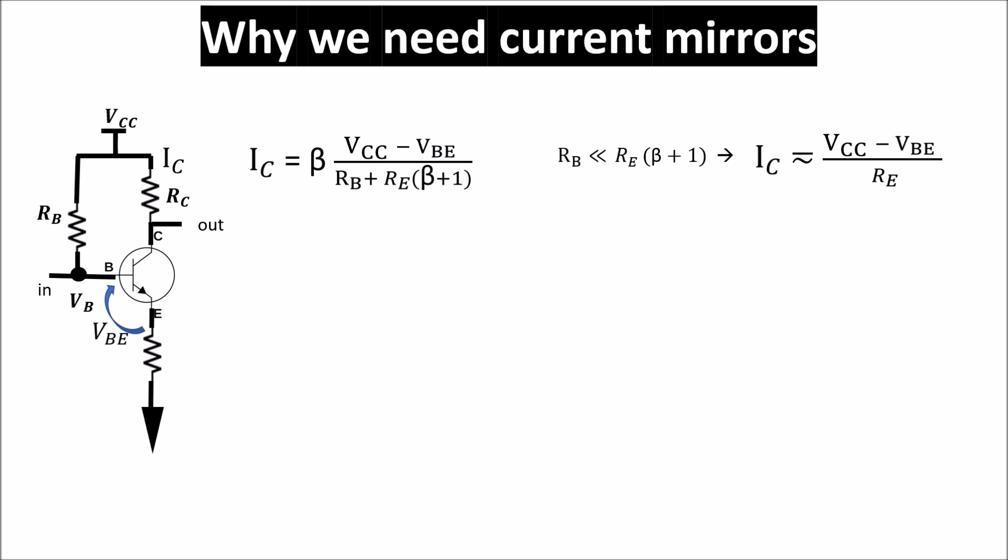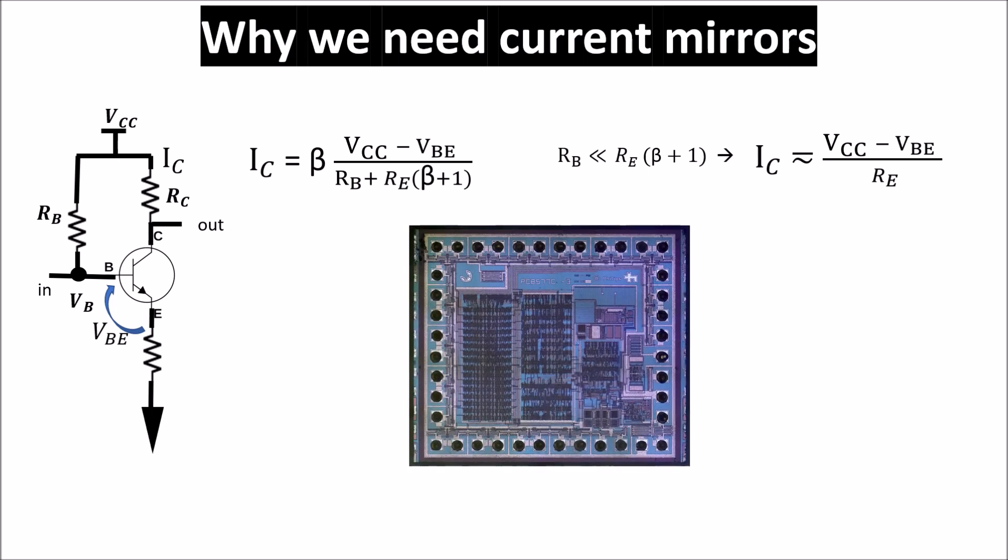But this is not enough, at least in integrated circuits where we have multiple transistors and multiple amplification stages and we cannot use so many resistors because they take too much room. In integrated circuits you prefer to make resistors from transistors which are smaller.